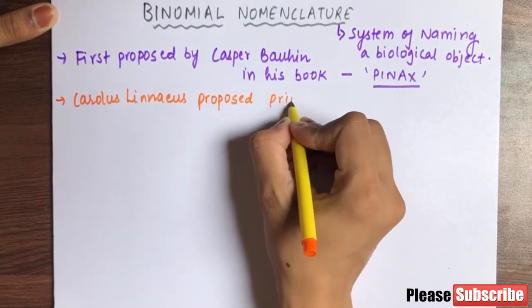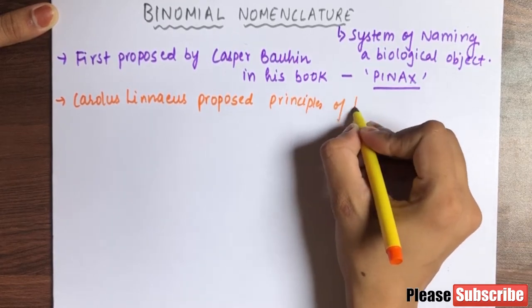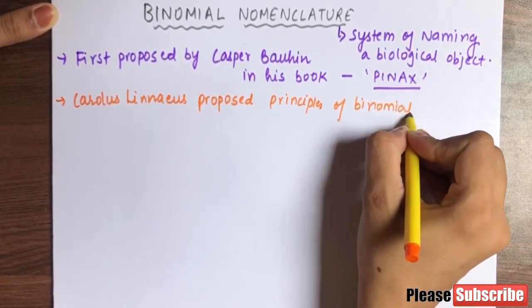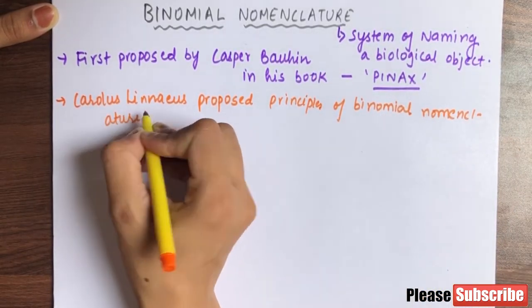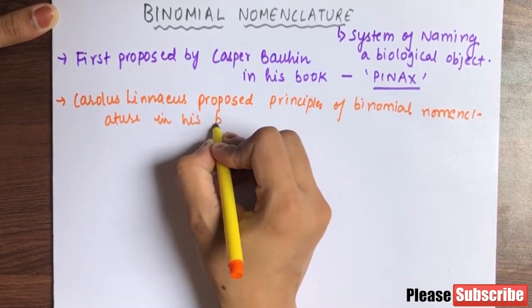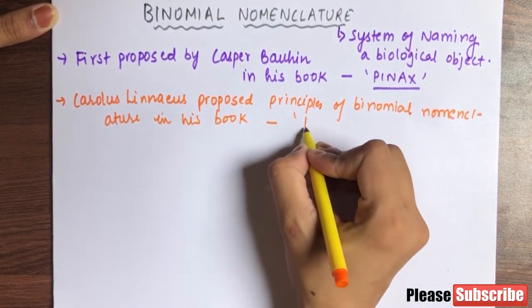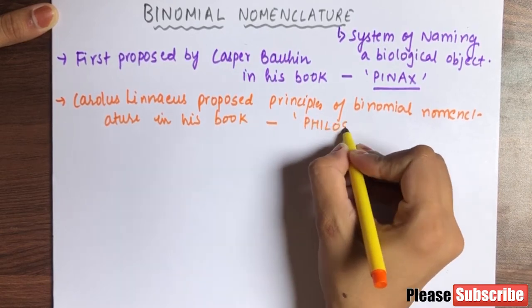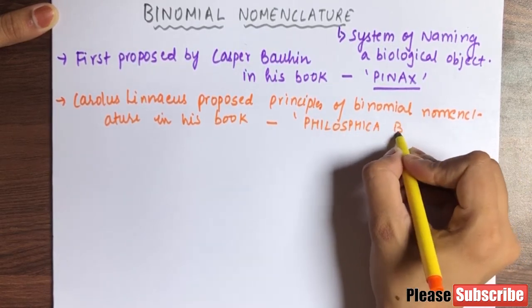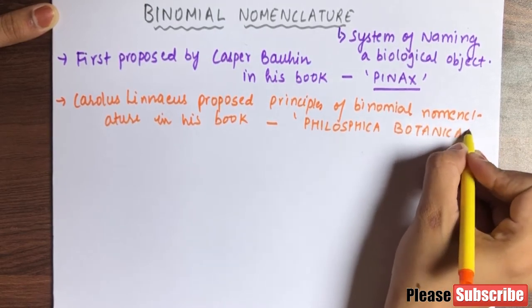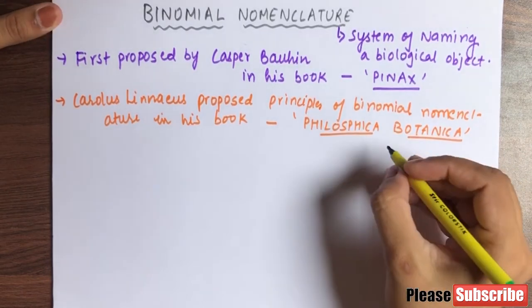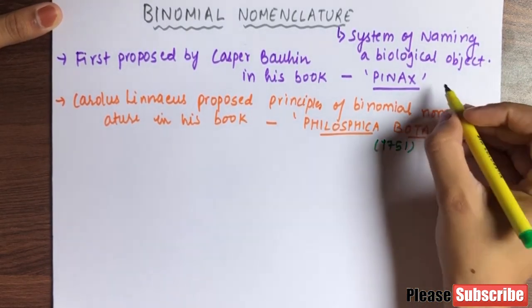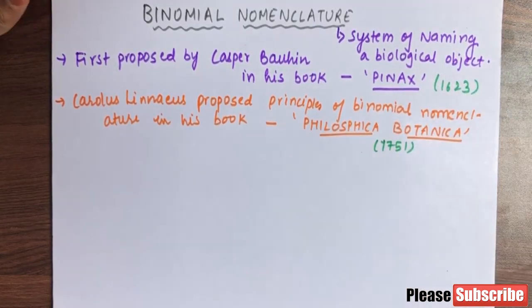Carolus Linnaeus proposed the principles of binomial nomenclature and described the rules in his book. His book name is Philosophia Botanica. This book came in 1751, and Pinax came in 1623.